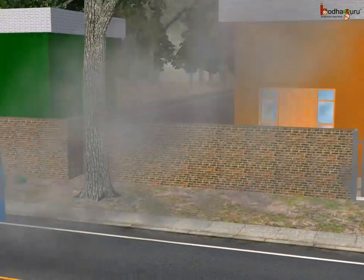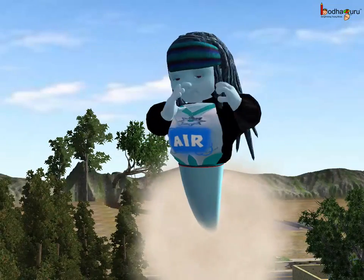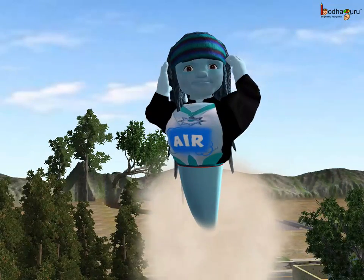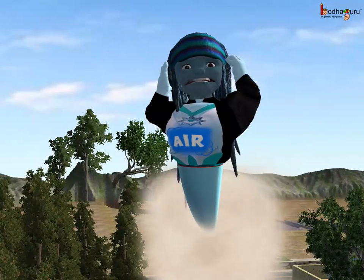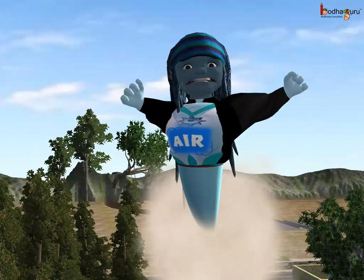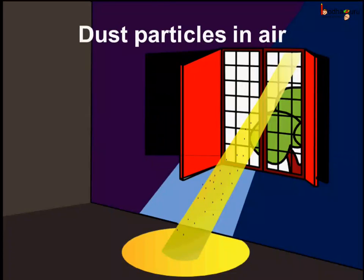That is why the airman's face became black and he became angry. Whenever sunshine enters a dark room, we are able to see the dust particles present in the air. So we can say the air contains dust.